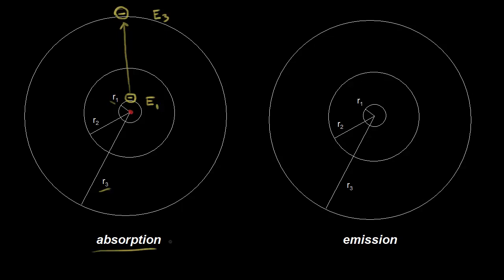This is only temporary though — the electron is not going to stay there forever. It's eventually going to fall back down to the ground state. Here on the diagram, the electron is at the third energy level and it falls back down to the first energy level. When it does that, it's going to emit a photon — it emits light. When the electron drops from a higher energy level to a lower energy level, it emits light. This is the process of emission.